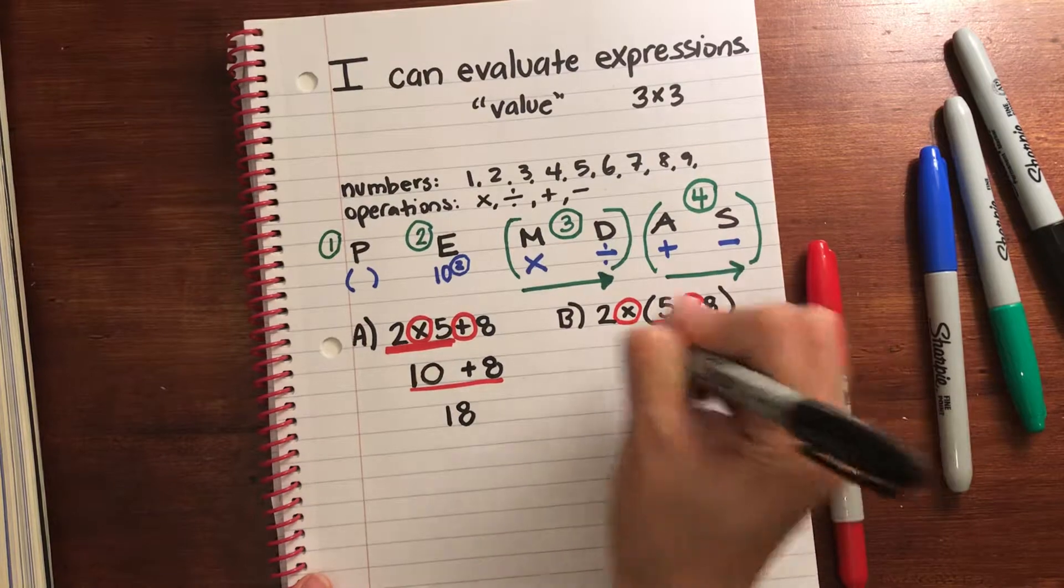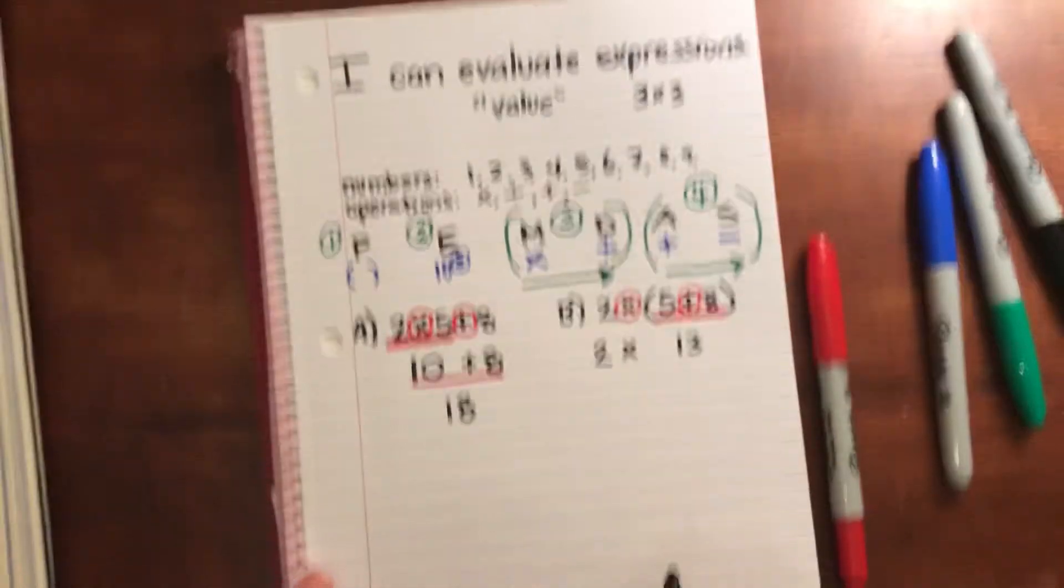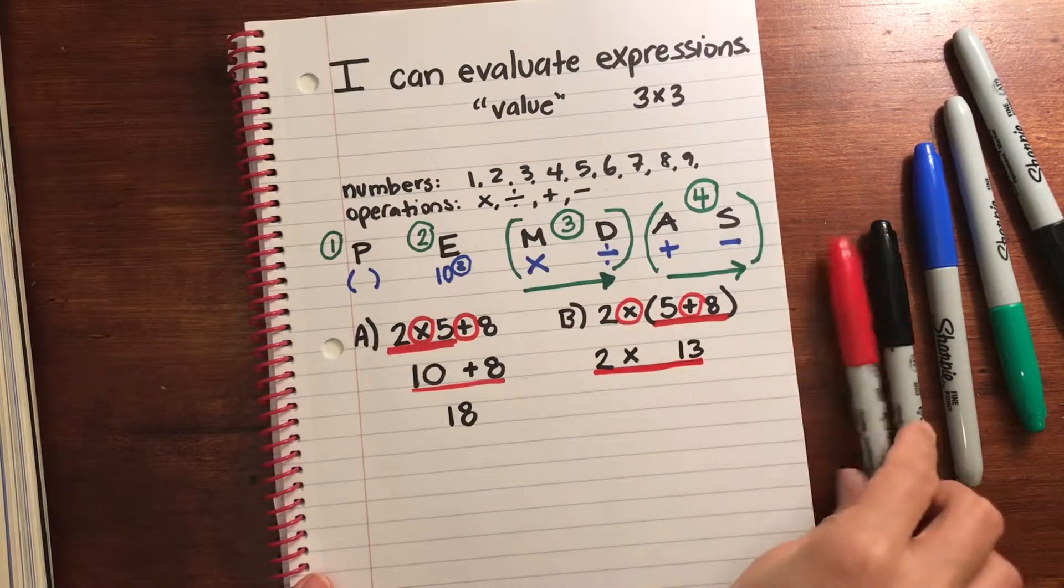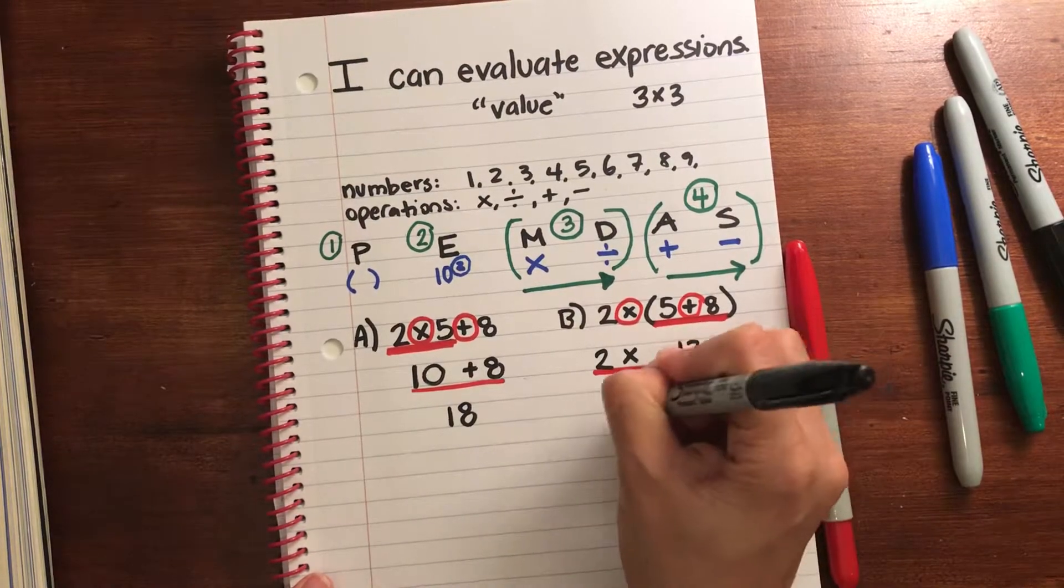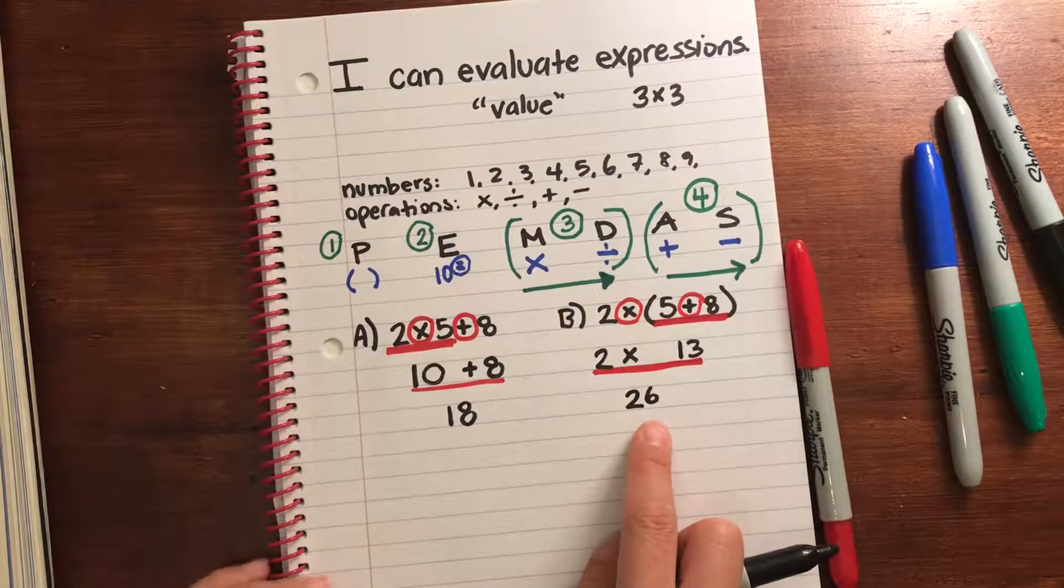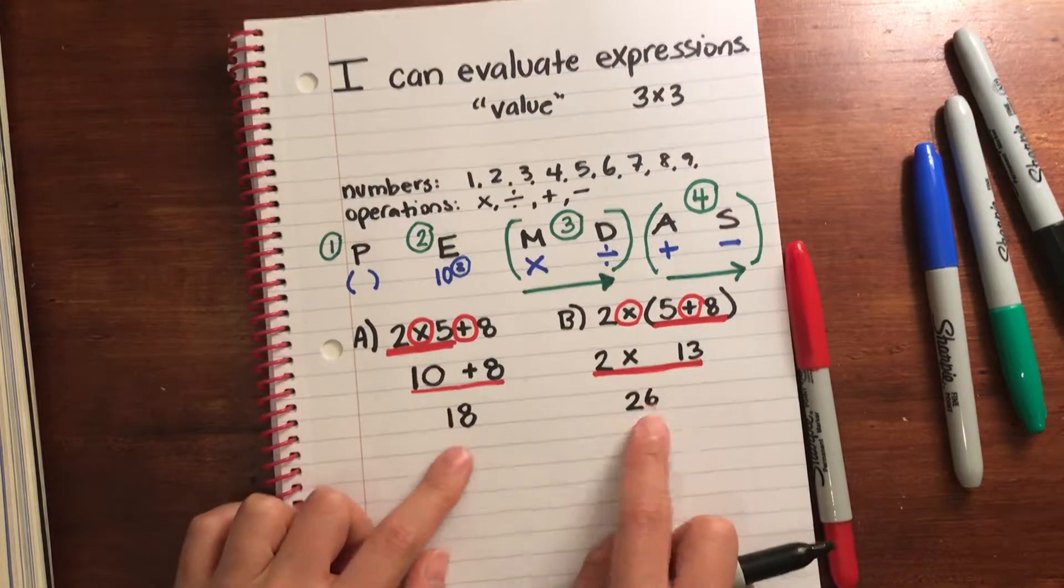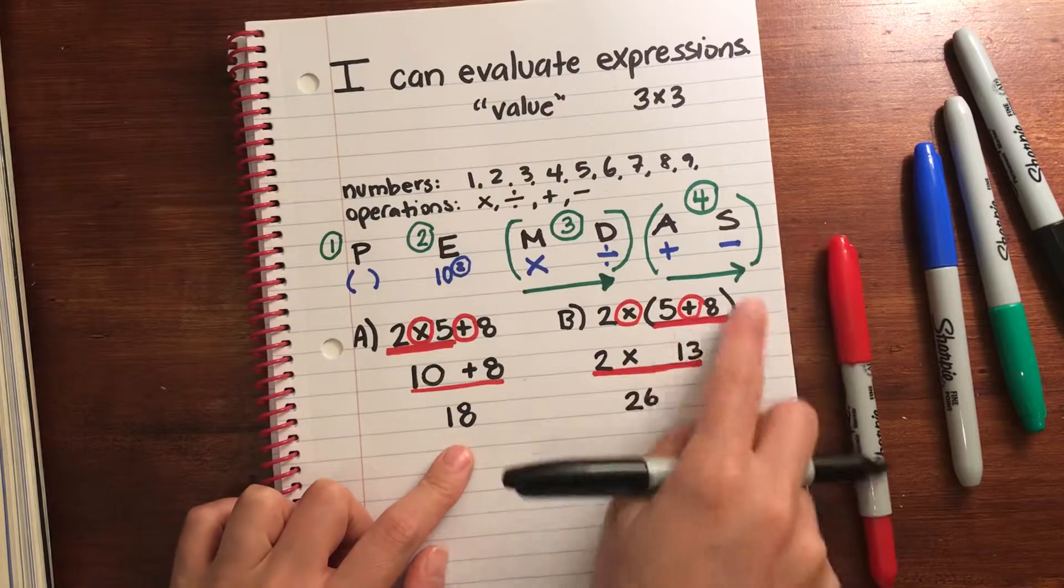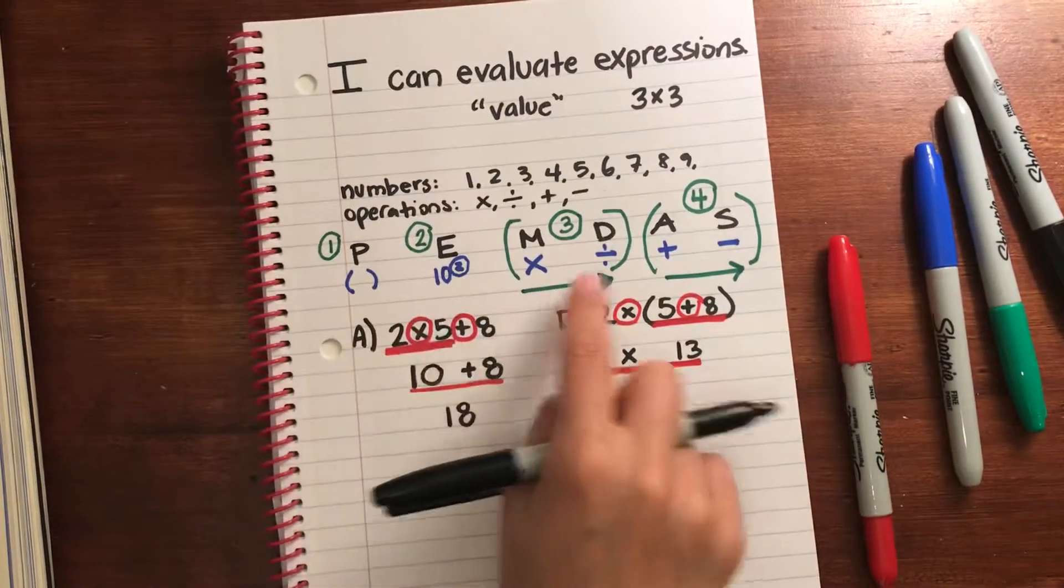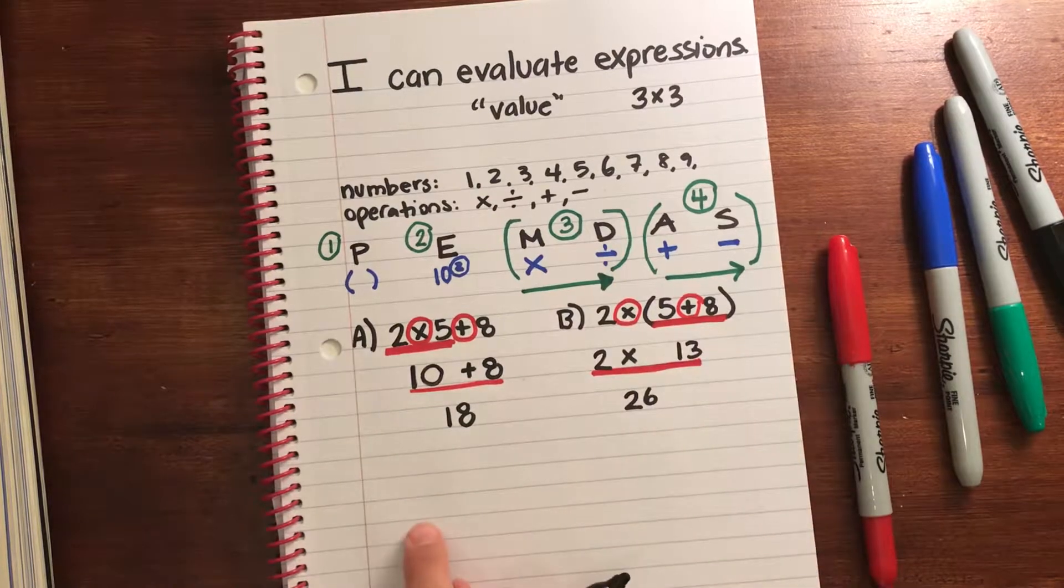Bring the rest of the expression down. And I have a multiplication operation. 2 times 13 is 26. Now clearly 18 and 26 are two very different numbers. And the only reason they are different is because of the parentheses. It's telling us to solve this first. You must use the order of operations when you're evaluating expressions.